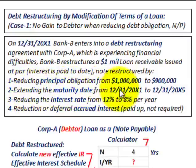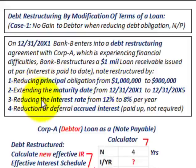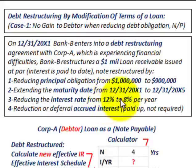Number two: they're extending the maturity date. It was originally due on 12/31/20X1, but now it's being extended out four years to 12/31/20X5. Number three: we're reducing the interest rate from 12% to 8% per year. So originally the loan was issued at 12%, but now it's being revised down to 8% per year.